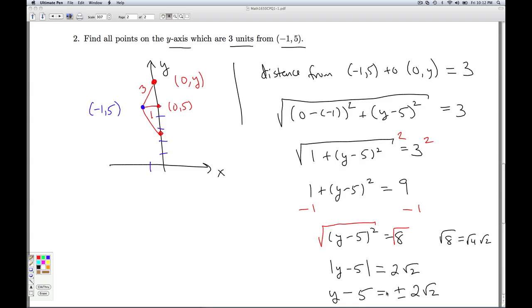I can drop the absolute values at the price of a plus or minus. And I get y - 5 = ±2√2. And then for my final answer, I can add 5 to both sides. And so I get my final answer here. For y, add 5 to both sides is 5 ± 2√2.